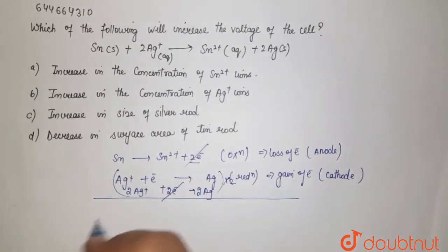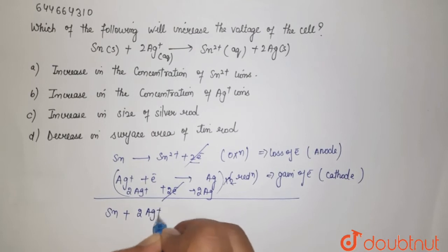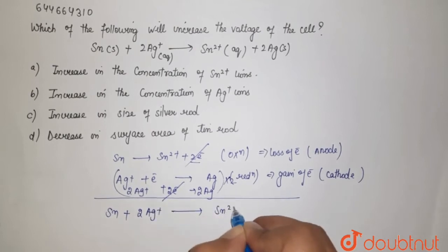Now if you add these two, electrons will cancel out. Here your Sn plus 2Ag plus gives you Sn2 plus plus 2Ag. So this is what's given in the reaction.